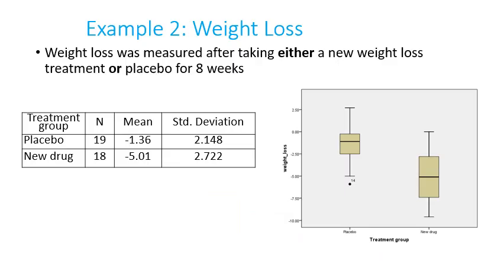Example 2 on weight loss: weight loss is measured after taking either a new weight loss treatment or a placebo for eight weeks. There are 19 participants in the placebo group and 18 in the new drug group. The mean for the placebo is negative 1.36 and for the new drug is negative 5.01. The standard deviation for the placebo group is 2.148 while for the new drug is 2.722.